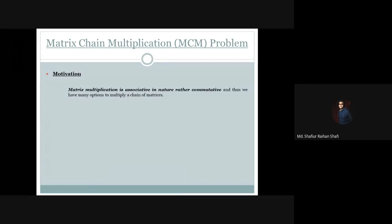The key observation is that matrix multiplication is associative in nature, but not commutative. And thus we have many options to multiply a chain of matrices. When we have only two matrices, there is only one option to multiply them.